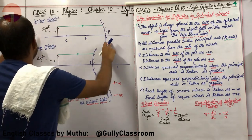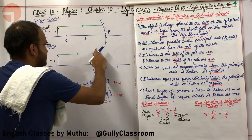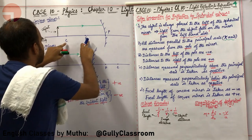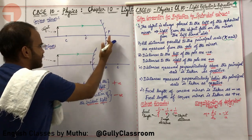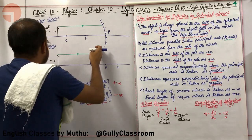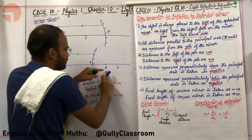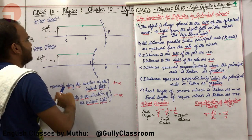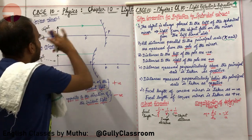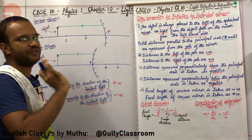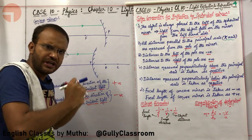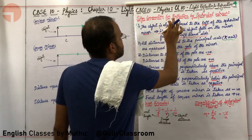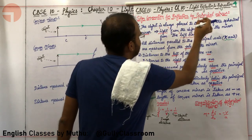This is a converging mirror — a concave mirror. This is a diverging mirror — a convex mirror. In a concave mirror, the principal focus and the center of curvature are present behind the mirror. All these things we have already studied in the previous lectures. The new thing we are going to learn now is sign conventions for reflection by spherical mirrors.